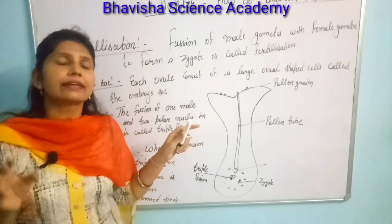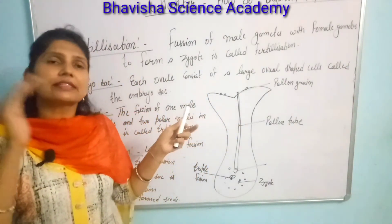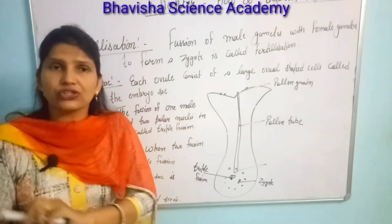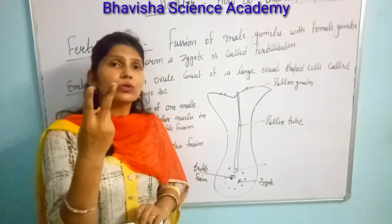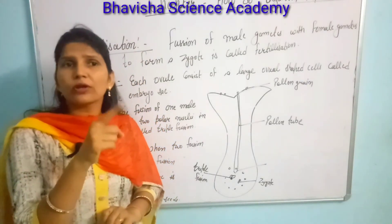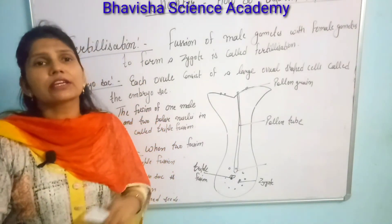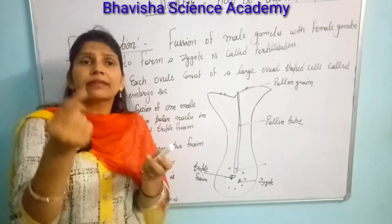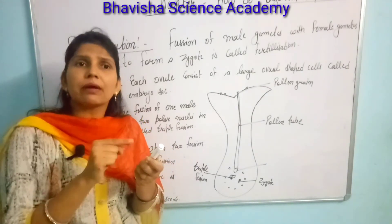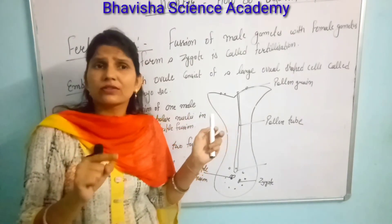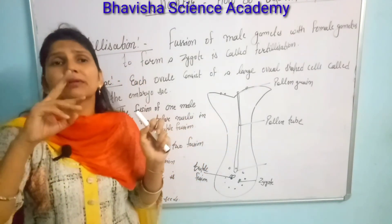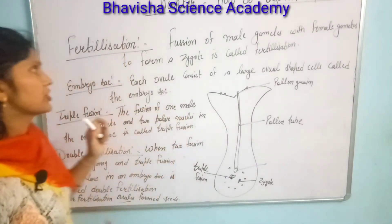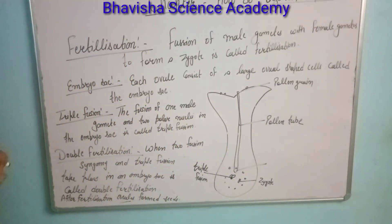When pollen grains travel from the stamen to the stigma, that process is known as pollination. Pollination is of two types: self-pollination and cross-pollination. Self-pollination occurs when pollen grains from the stamen of the same flower land on the stigma of the same flower. Cross-pollination occurs when this process happens between different flowers.